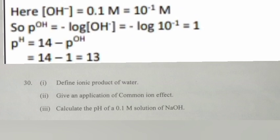So pOH equals minus log [OH-] equals minus log 10 to the minus 1 equals 1. pH equals 14 minus pOH equals 14 minus 1 equals 13.